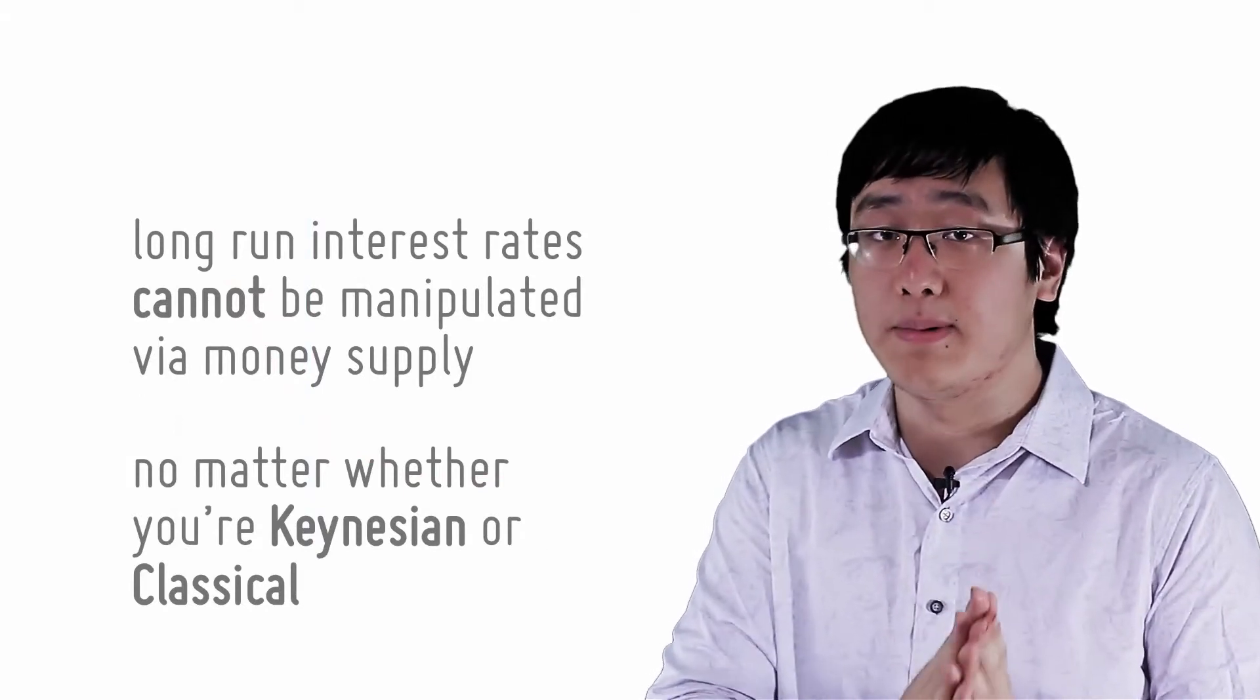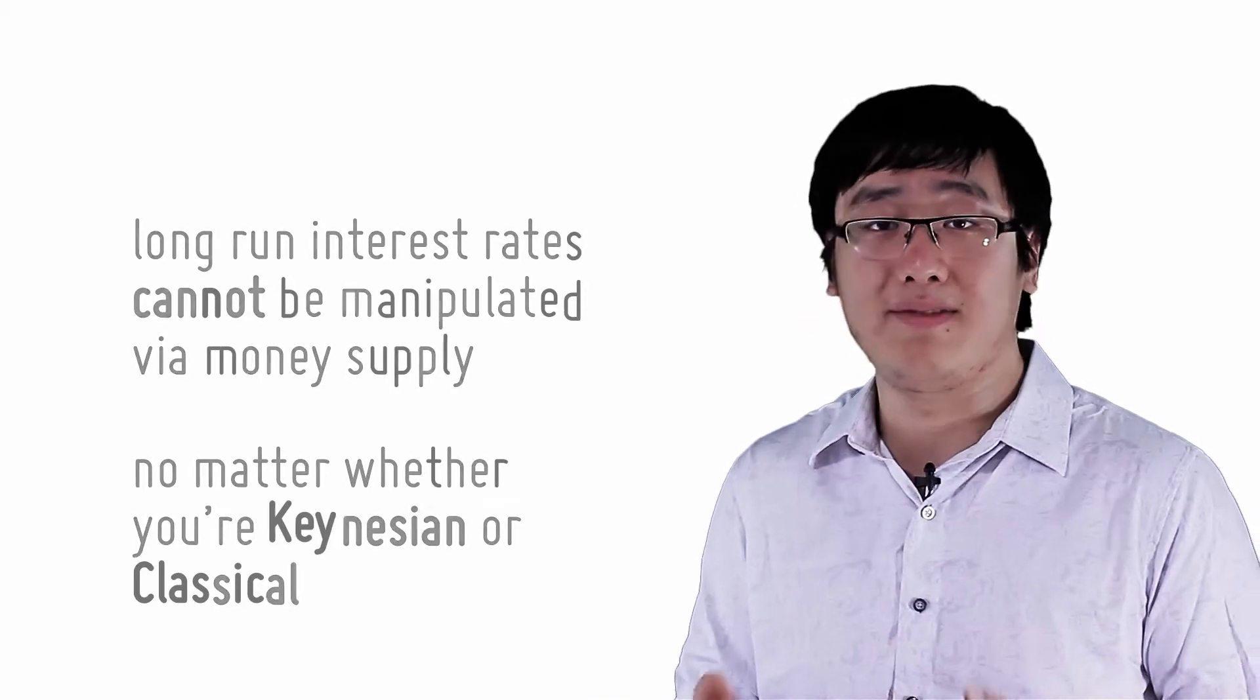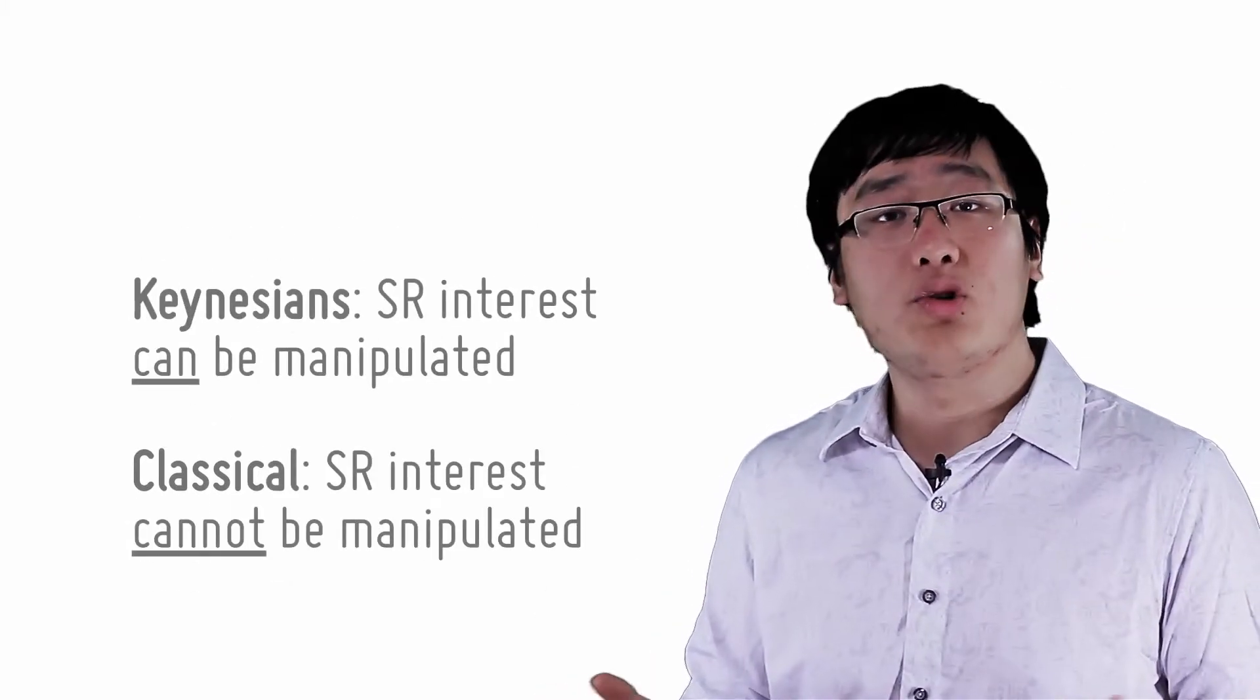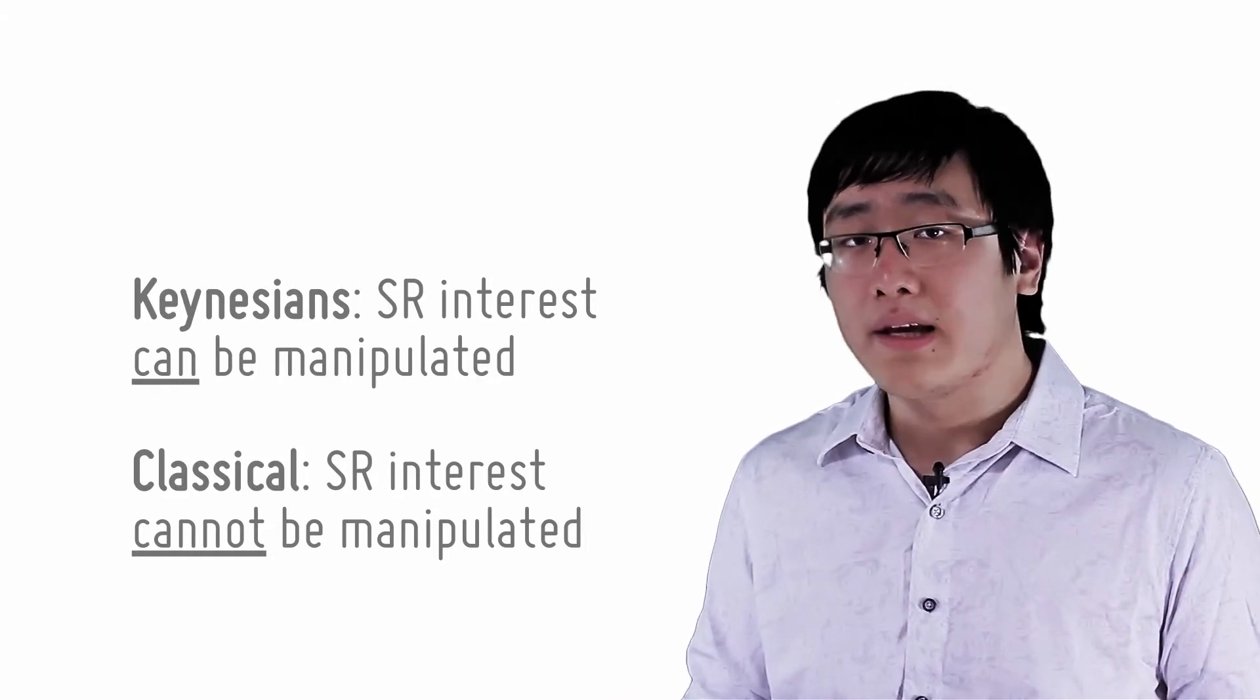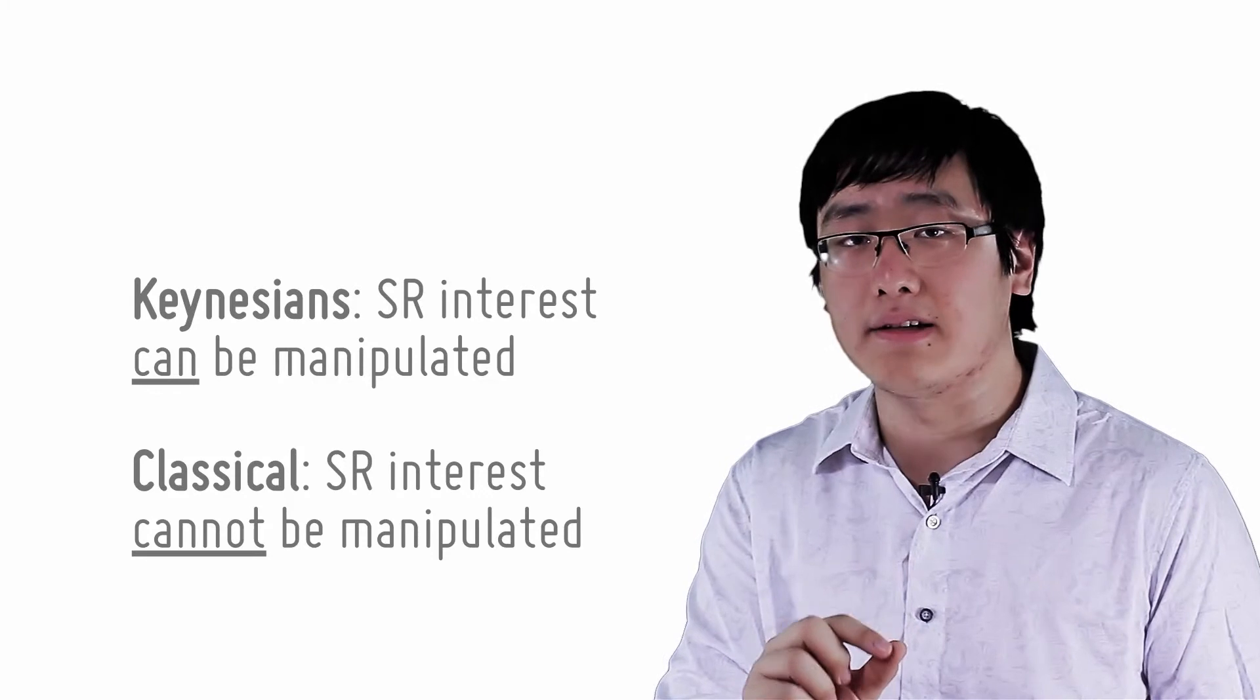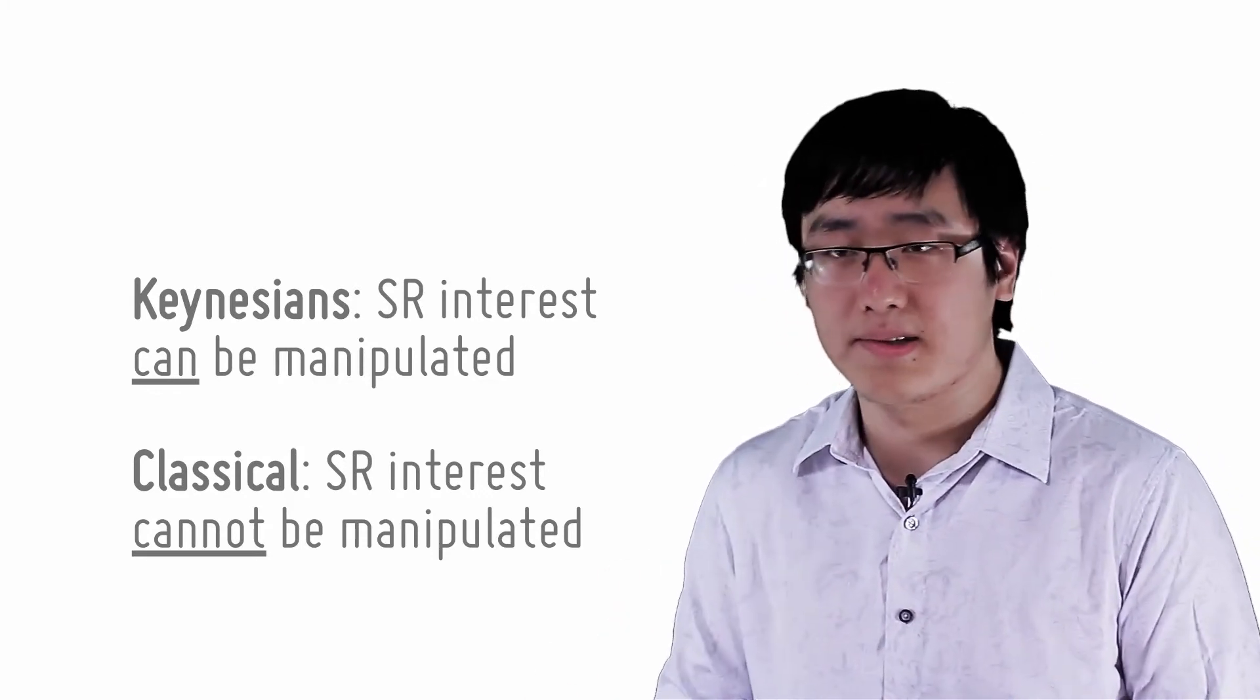However, this highlights the difference between short run and long run interest rates. Classical economists believe that short run and long run interest rates are essentially the same thing and there is no way to manipulate short run interest rates. Keynesian economists, however, believe that short run interest rates can be manipulated using the money supply but in the long run, they will still tend towards long run interest rates.